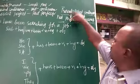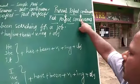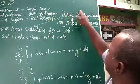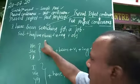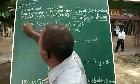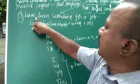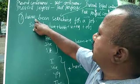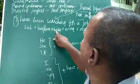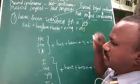Today, present perfect continuous changes to past perfect continuous. The sentence is in present perfect continuous — it should have the subject. 'I' is the subject. Here 'have' is given. Have or has you have to take — that is the formula. And 'been' is already taken here. V1 — 'search' is V1, in -ing form. 'Job' is the object.